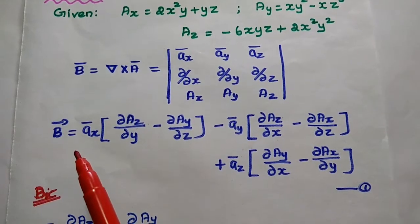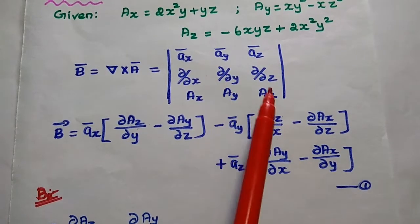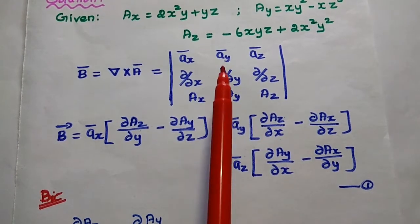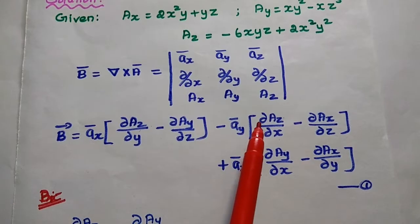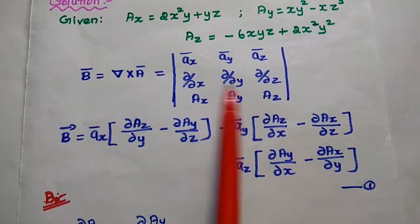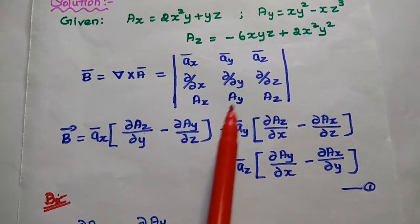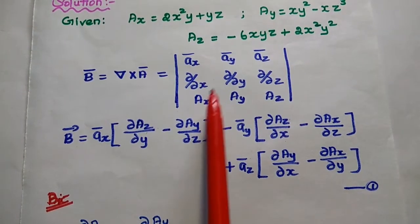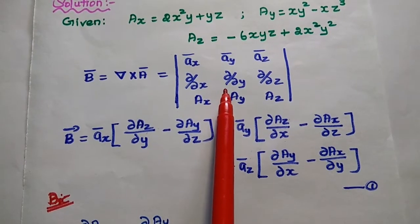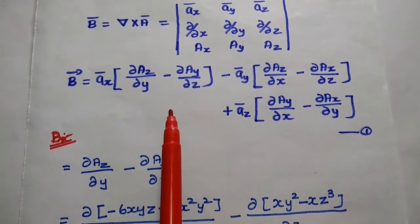Expanding the matrix, B vector equals ax̄ times (∂Az/∂y − ∂Ay/∂z), minus ay̅ times (∂Az/∂x − ∂Ax/∂z), plus az̄ times (∂Ay/∂x − ∂Ax/∂y). This is the standard formula for the curl operation, and we consider this as the first equation.